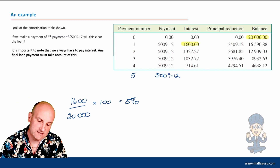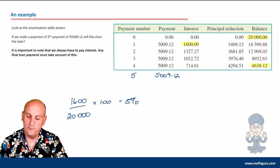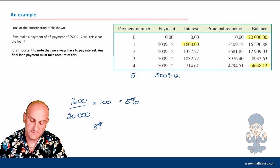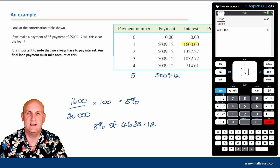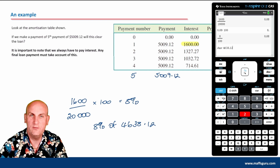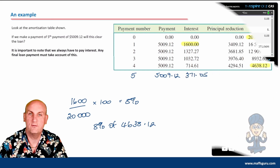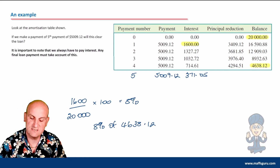So the question is: how much interest will I pay on the balance of $4,638.12? I'm going to pay 8% on it, so I want 8% of $4,638.12. Doing 8 divided by 100, times $4,638.12 on the calculator, and rounding to two decimal places, gives me a grand total of $371.05. So there's my interest for that fifth payment.